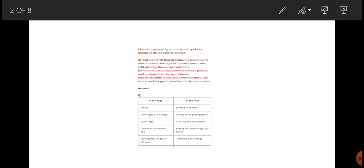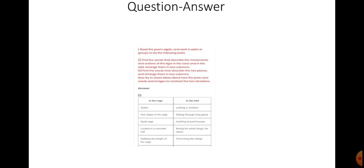Let's start with the questions from the textbook itself. Here is the first question. Read the poem again and work in pairs or groups to do the following task. This is a pair activity. All the words about the tiger being in a cage and the tiger being in the wild we have read in the poem and understood well, so it will be very easy for us to do. For your help, the answer has already been provided.